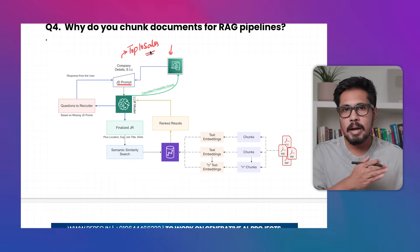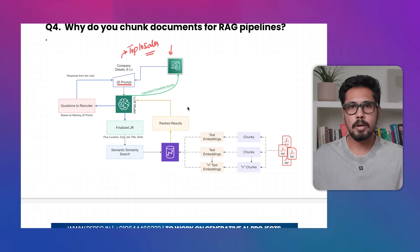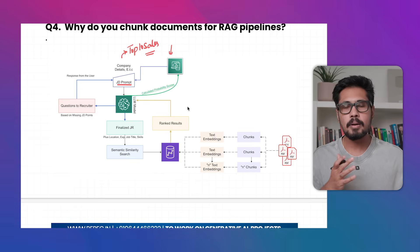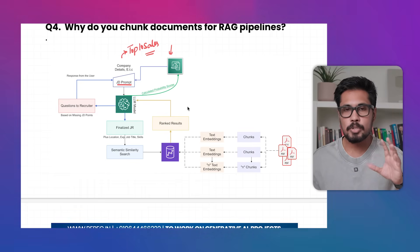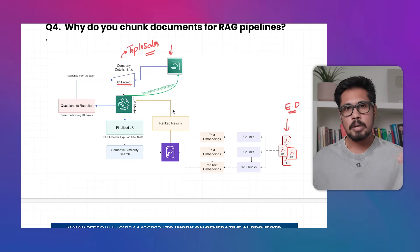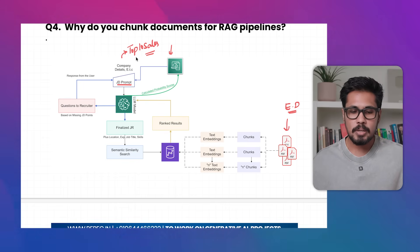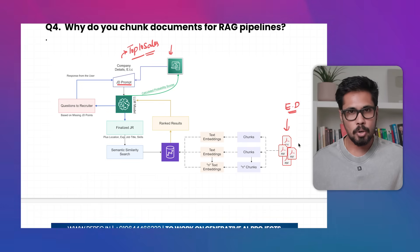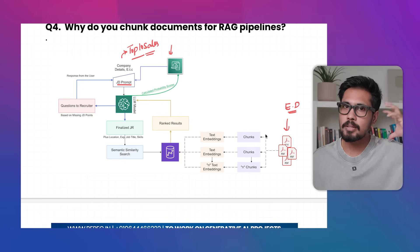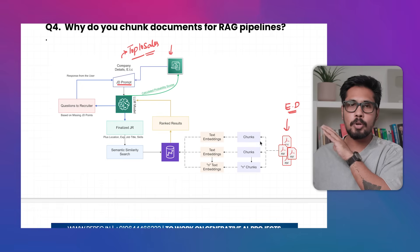You want to take your external data, like company PDF documents or last year's annual report, and have the LLM give the top 10 sales based on that. So we feed that external document to the LLM model. Whenever a user asks a prompt, the LLM needs to search the external document and give a response using the context from that document.